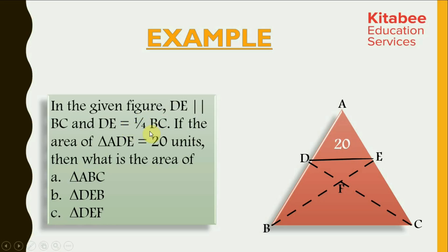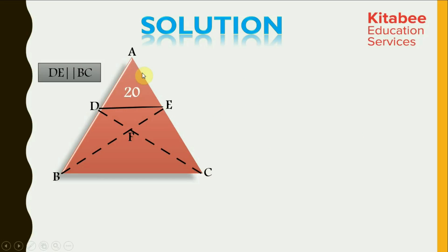If the area of triangle ADE is given to be 20 units, we have to calculate the area of triangle ABC, triangle BDE, and triangle DEF. This is the given figure in which DE is parallel to BC and area of triangle ADE is equal to 20 units.